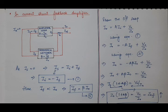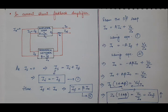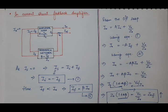In case of voltage feedback amplifiers, output impedance decreases by a factor of 1 upon (1 + A·beta). In case of current feedback amplifiers, the output impedance increases by a factor of (1 + A·beta) on applying negative feedback. This is all about this lecture.